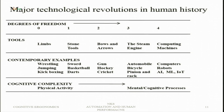To recapitulate: when limbs are used there is 0 degrees of freedom — the human body is in direct contact with the object operated on, with contemporary examples like wrestling and jumping. Sword, basketball, and darts represent 1 degree of freedom, with one tool intervening between human body and goal. Gun, hockey, and cricket are 2 degrees of freedom. Automobile, bicycle, and rack-and-pinion are 3 degrees of freedom, and computers represent 4 degrees of freedom.